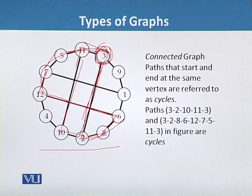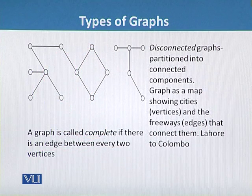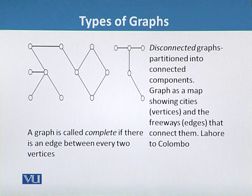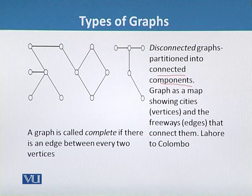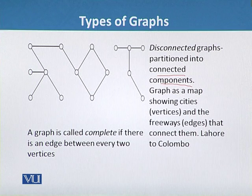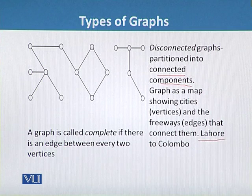The third type is the disconnected graph. A disconnected graph can be partitioned into connected components. We can think of a graph as a map showing cities, representing each city as a vertex and highways as edges connecting them. Not all cities are connected by highways — for example, we cannot travel from Lahore to Colombo through highways.